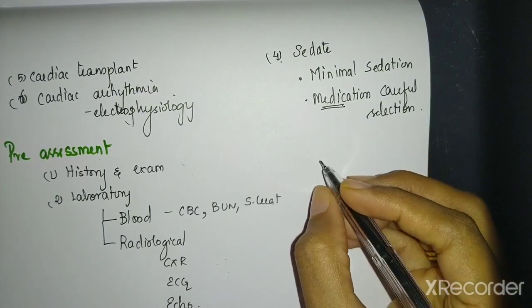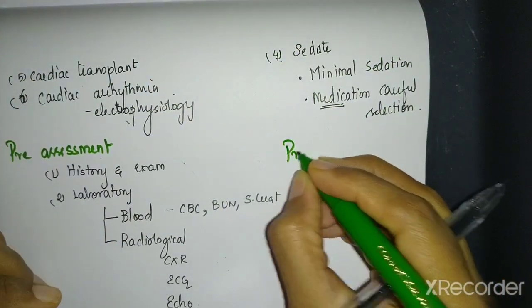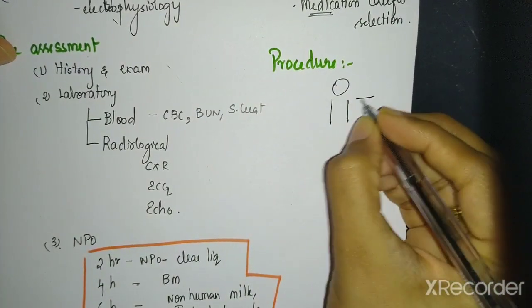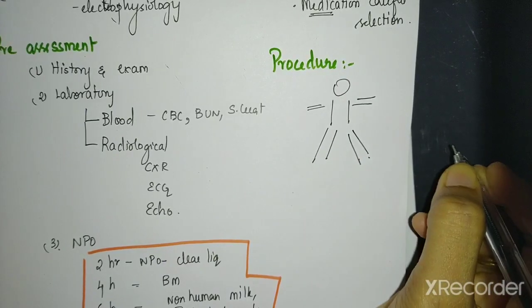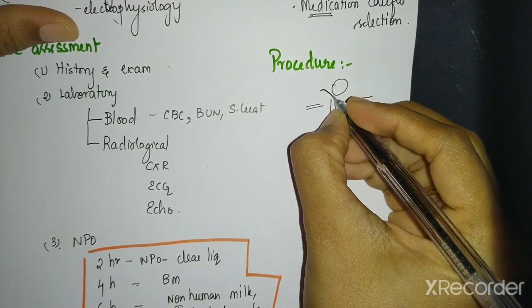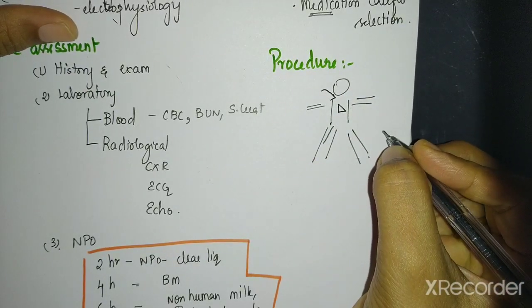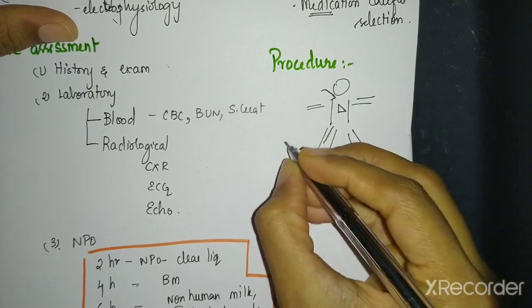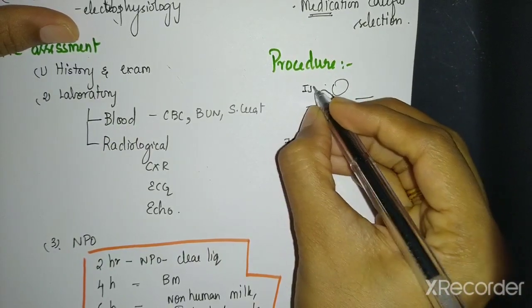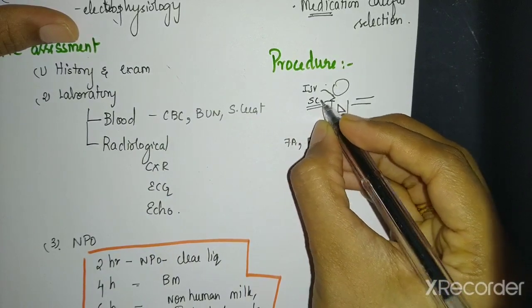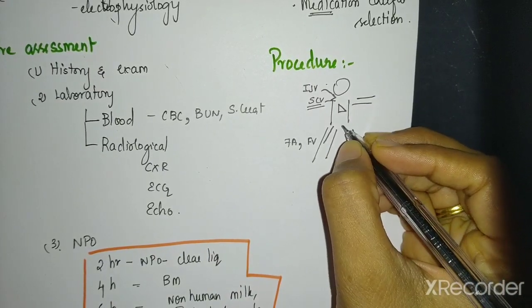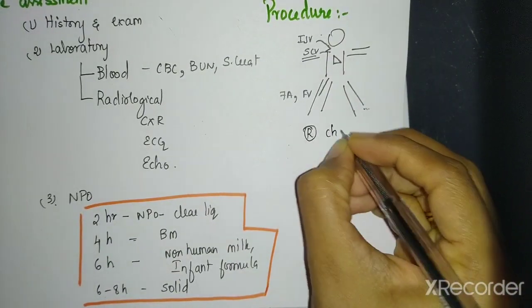So now you have sedated the child. You have given everything. So you are introducing the catheter. What is the procedure? Procedure is very simple. You need to introduce some sort of catheter into the child. And where and all the catheter can go through? The catheter can go through the leg. The catheter can go through the neck. Ultimately it has to reach the heart. So in leg, it can be femoral artery or femoral vein depending upon where you want to reach. Here it is usually internal jugular vein or sometimes even subclavian vein is used.